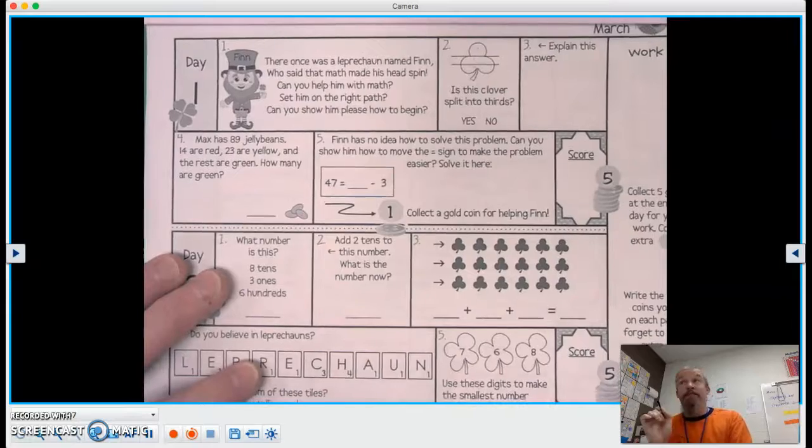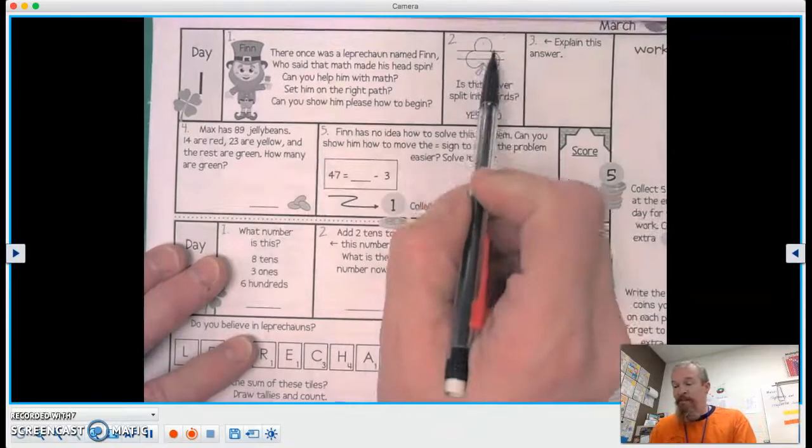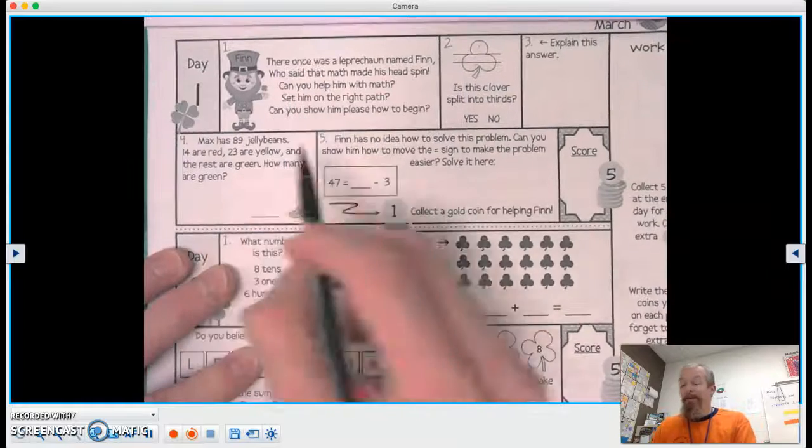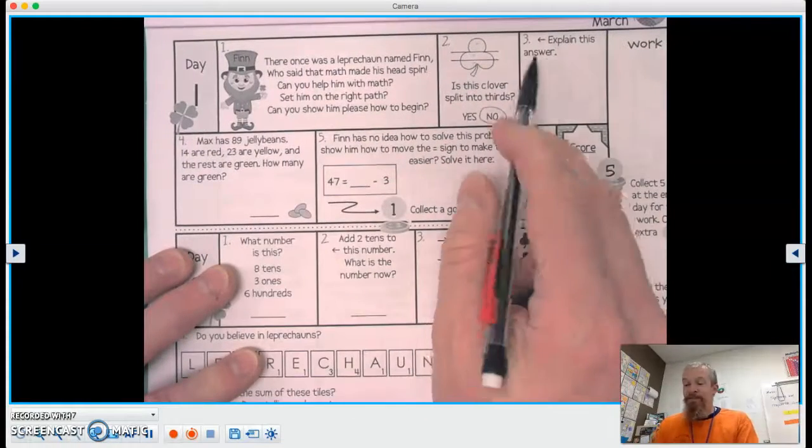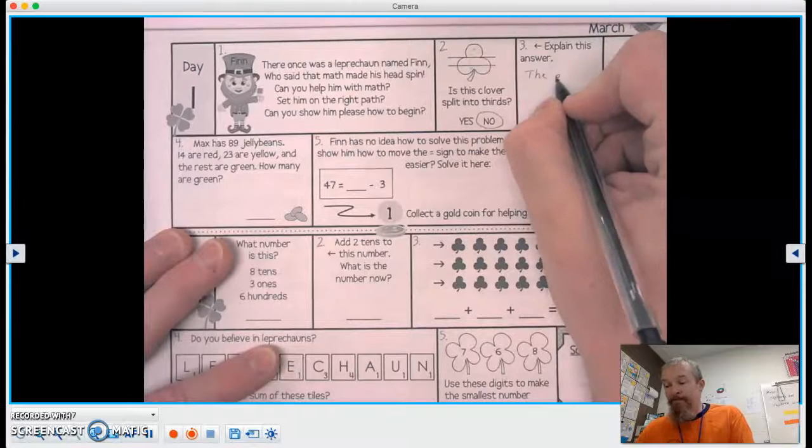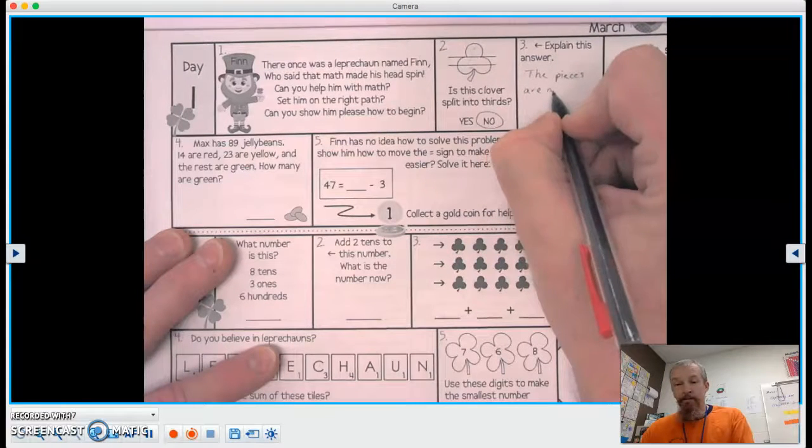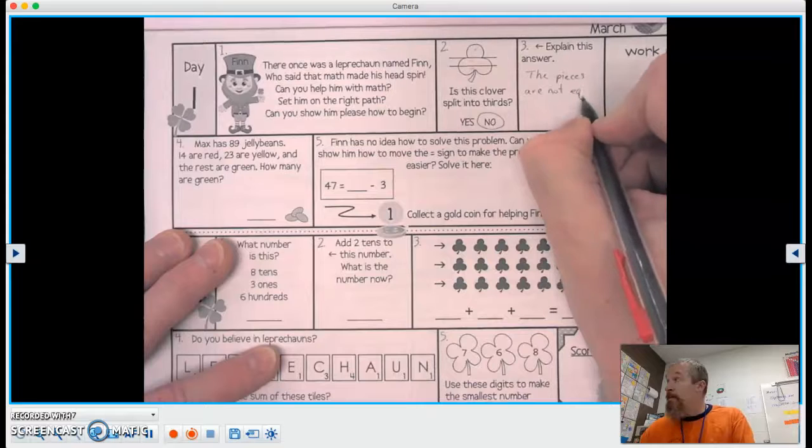But the trick question is, are they even? Is this the same amount as this? No. So explain this answer. The thirds or the pieces, right? The sections. The pieces are not equal.